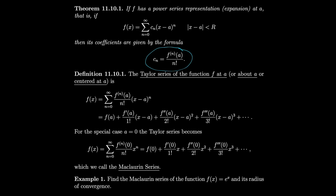Now we know what the constants are, assuming f has a power series representation — but we must verify that it does. The Taylor series of f at a is defined as this power series with those coefficients: the sum of f^(n)(a)/n! times (x minus a)^n. When a = 0, the terms simplify to x^n with derivatives evaluated at 0; this special case is called a McLaurin series — just a Taylor series centered at zero.